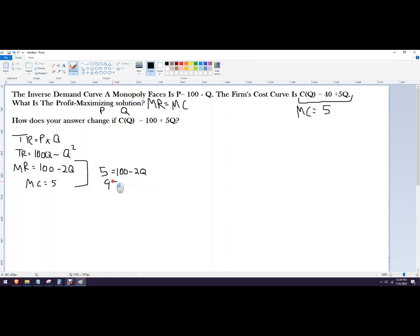So I've got 95, I can say 95 equals negative 2Q. Okay, and then divide both sides by negative 2, and I get Q equals 95 divided by 2 is 47 and a half.